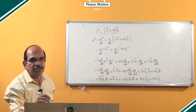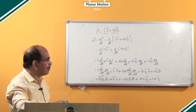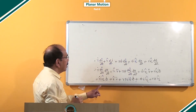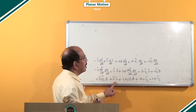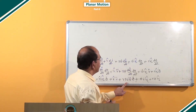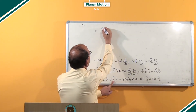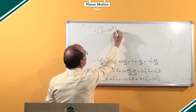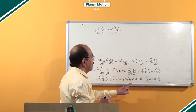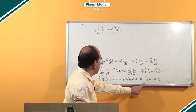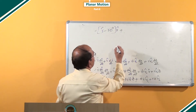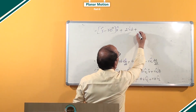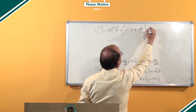Now, in this expression, if you club the terms containing r-cap and r-perpendicular-cap, you are left with the following. Collecting the r-cap terms: r-double-dot minus r·θ-dot² into r-cap. Collecting the r-perpendicular-cap terms: 2·r-dot·θ-dot plus r·θ-double-dot into r-perpendicular-cap.